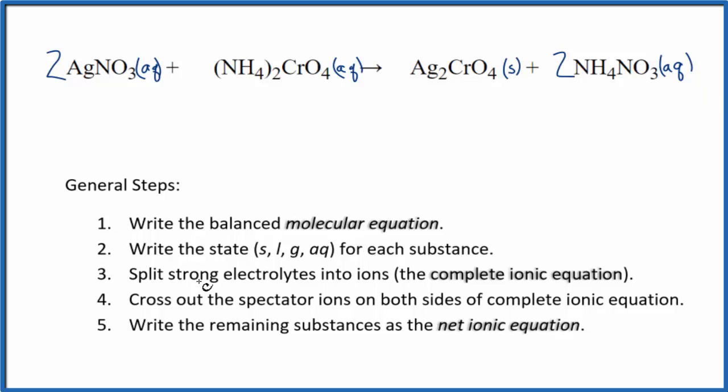So we have our states. Now let's split the strong electrolytes into ions for the complete ionic equation. Silver is always one plus and the nitrate ion is whole thing one minus. So we have two silver ions, Ag plus. I'll write the states later. Plus two of these nitrate ions, NO3 minus. The ammonium ion, the whole thing is one plus. Chromate ion is two minus.